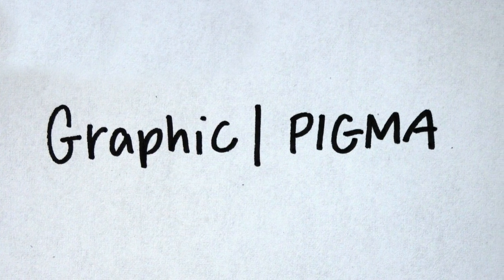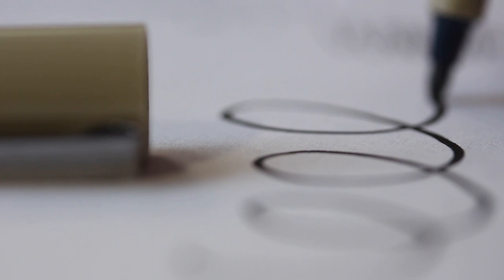This marker is better for drawing bigger letters or shading in large areas because you can cover more ground quickly. Because it is felt tip, the tip does wear down as you use it, especially on paper that has texture.